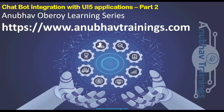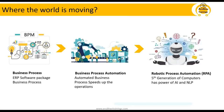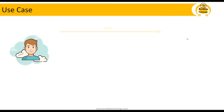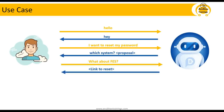Hello and welcome to the Anubhav learning series videos. In the last video we discussed the basics of robotic process automation and its benefits. In today's session we will discuss how to create our first chatbot using conversational AI. If you have not seen my last video, please follow the description to find the link to part 1. In the last session we talked about where the world is moving in terms of RPA, its benefits, and our use case to create a complete end-to-end application integrated with an SAP UI5 app using our conversational AI tool.